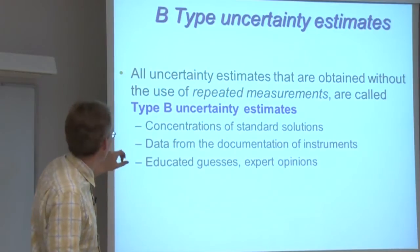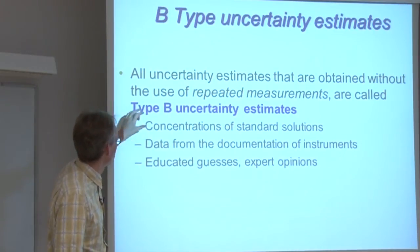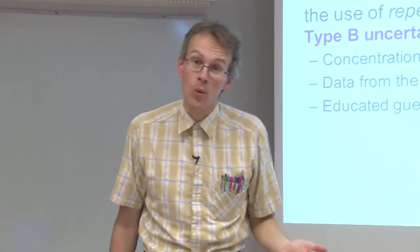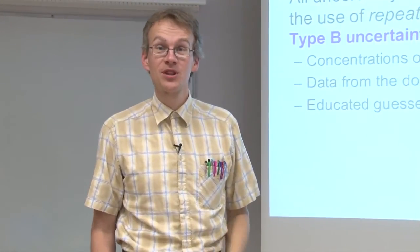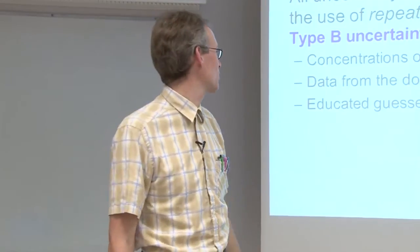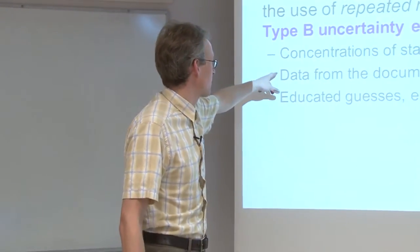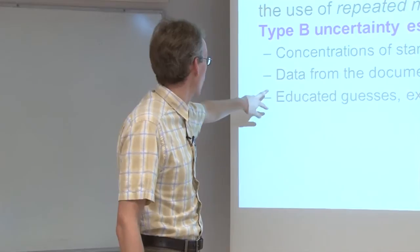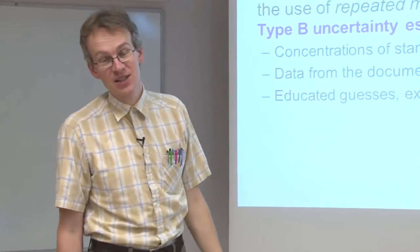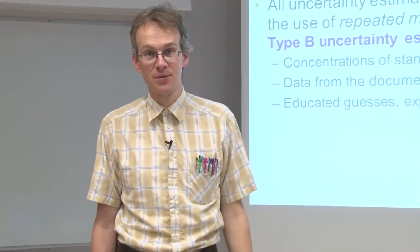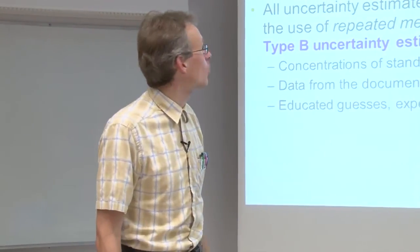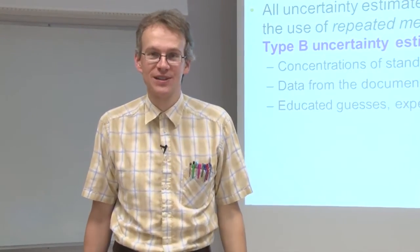And here we can bring as examples, for instance, concentrations of standard solutions whereby the uncertainty of the concentration is obtained from the certificate of the standard solution, or some data from the instrument documentation, or educated guesses or expert opinions, which in chemistry are quite important. Those also qualify as B-type uncertainty estimates.